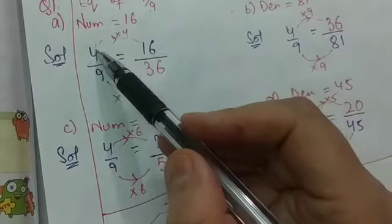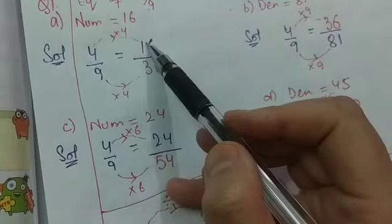This arrow is representing that we are multiplying from this side. That means forward multiplication is happening.